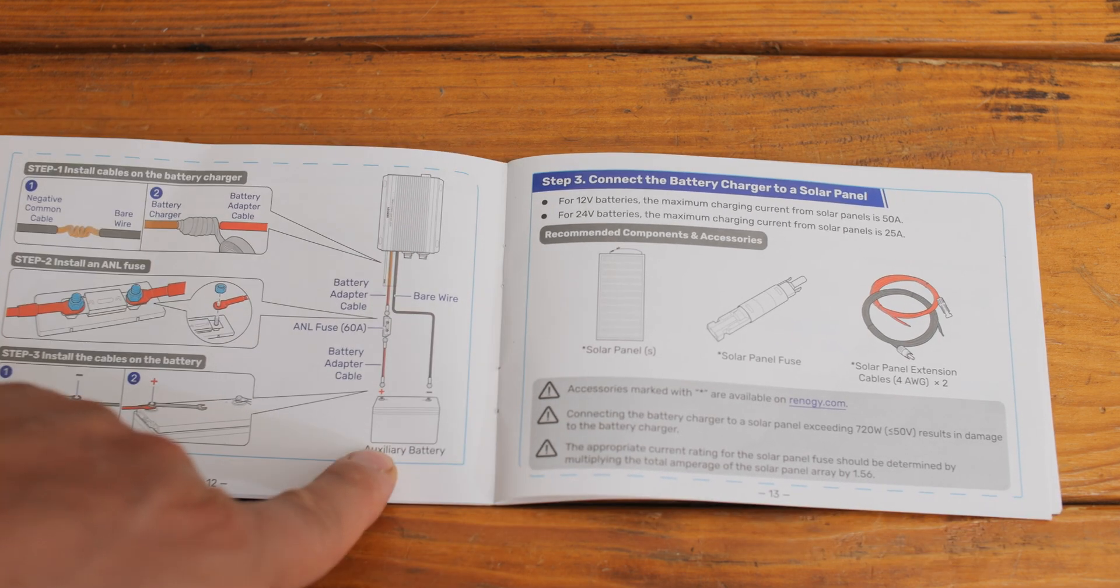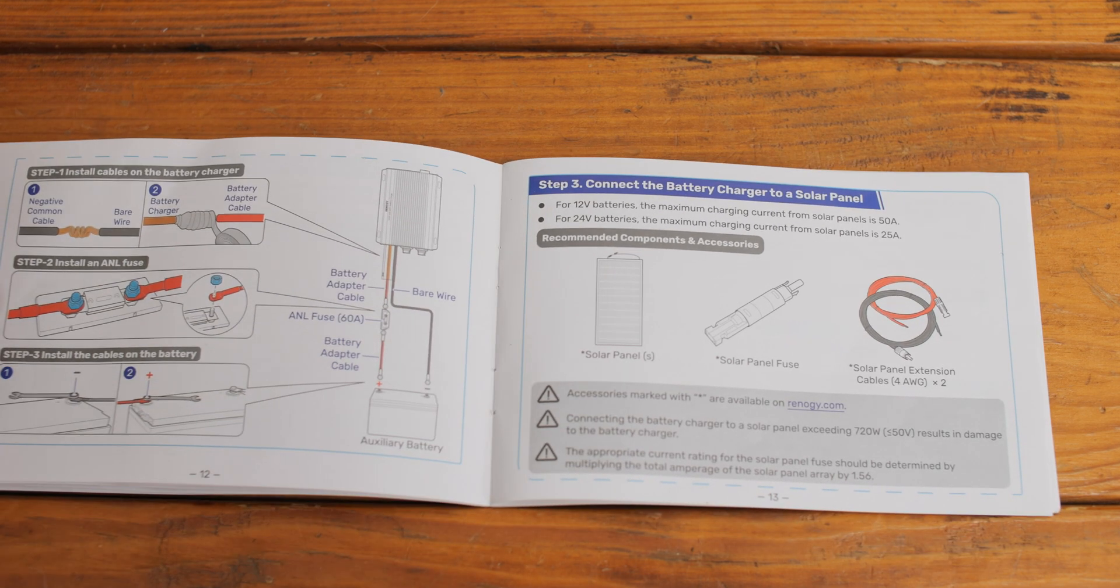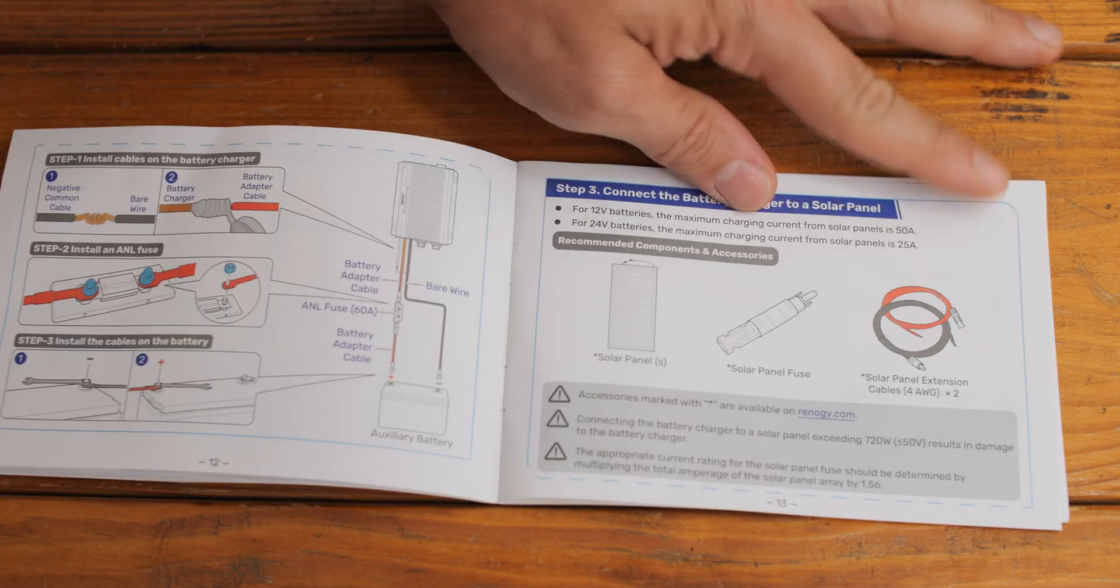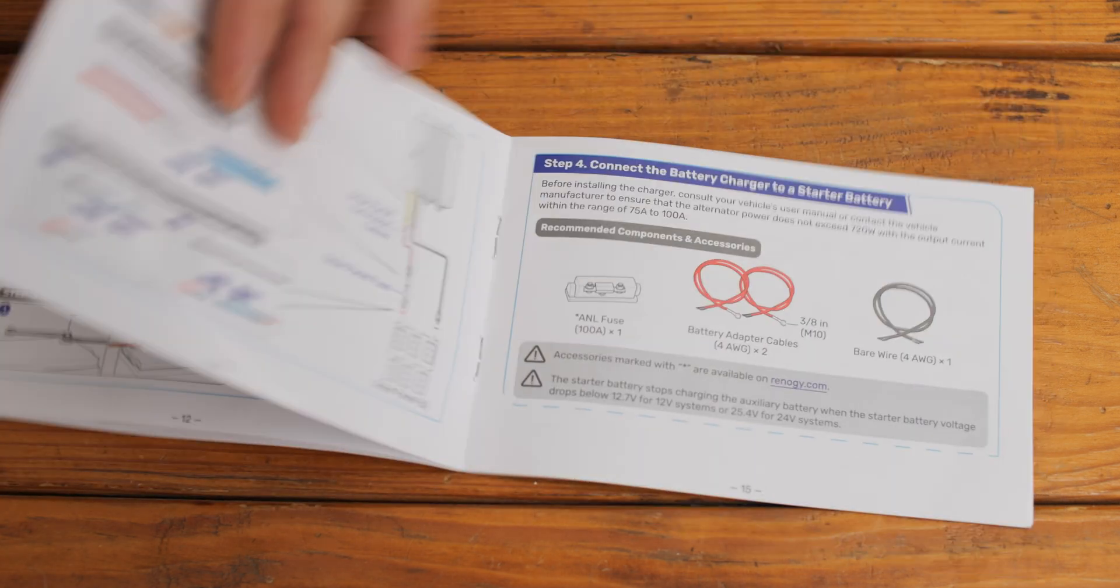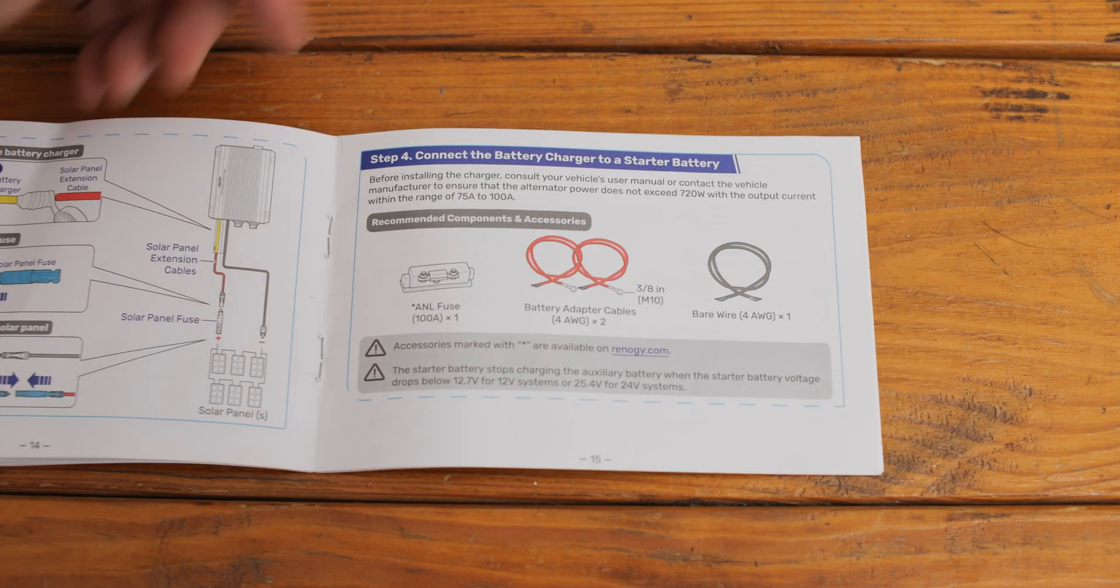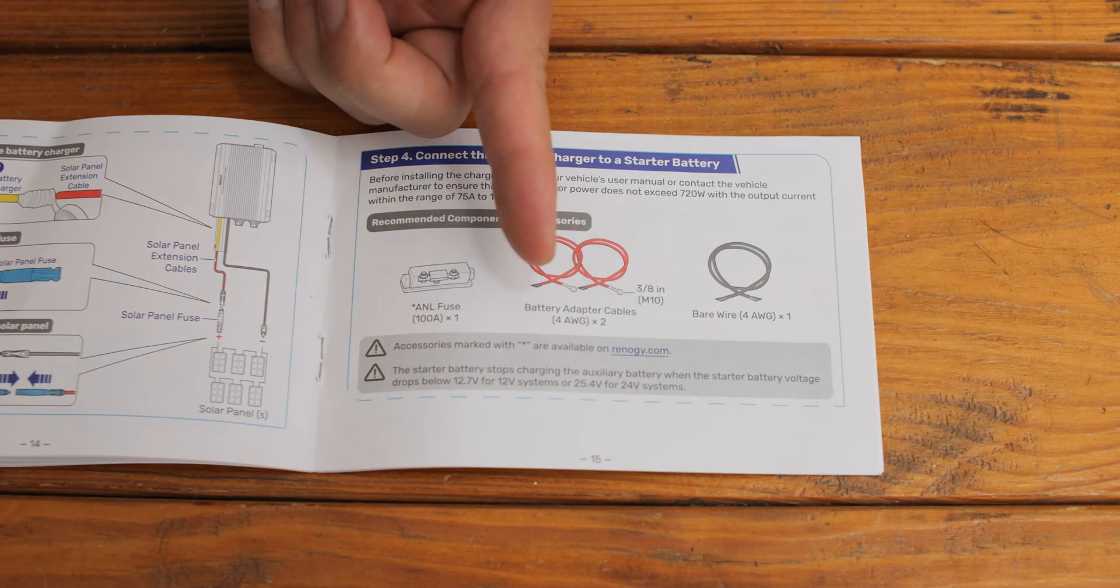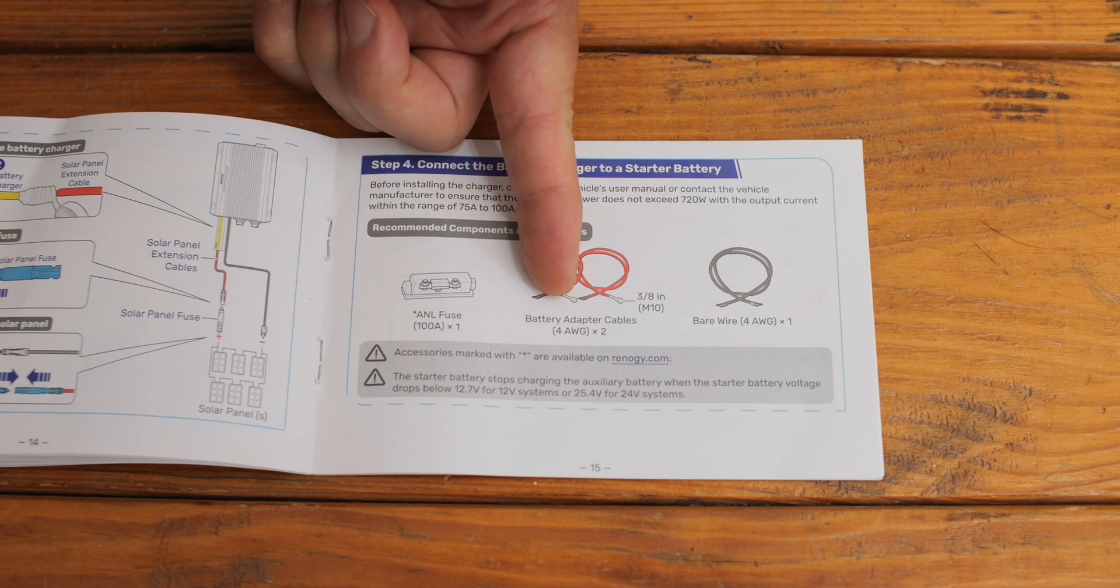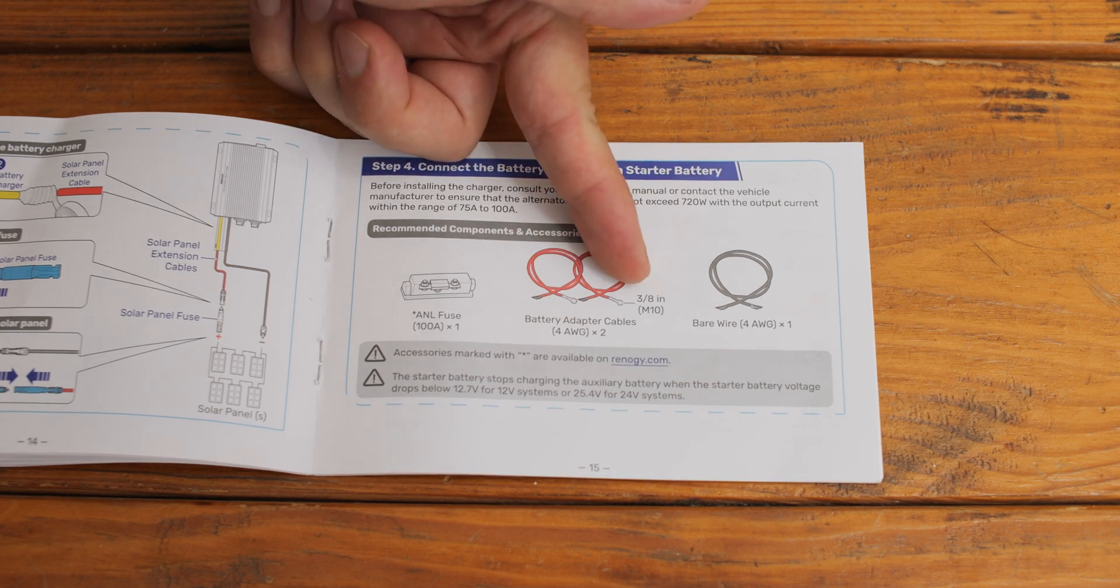If you look at the actual diagram here, here's where I start to have a concern. When you go to the starter battery, which is where a lot of the juice comes from, they're asking for 4-gauge and again M10 connectors.